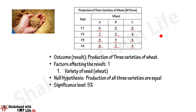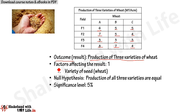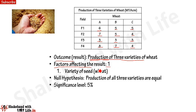The example is the same as used in the previous video with the direct method. Now we use the coding method for one-way ANOVA. The outcome is the production of three varieties of wheat. The factor affecting the results is the variety of seed used for production — there is only one factor.